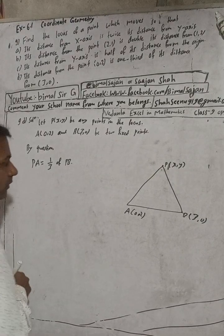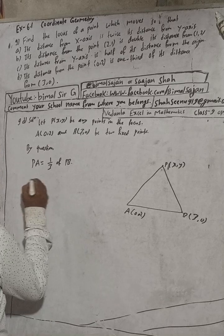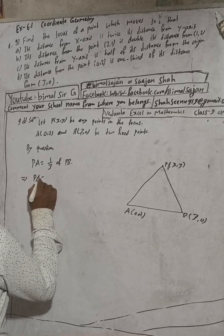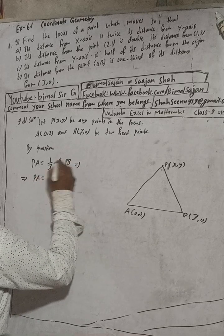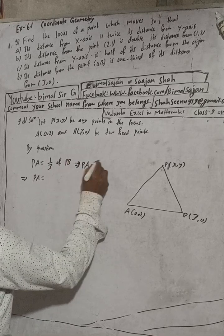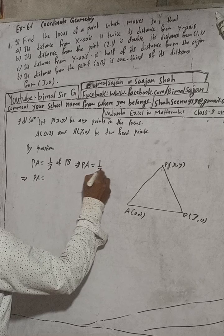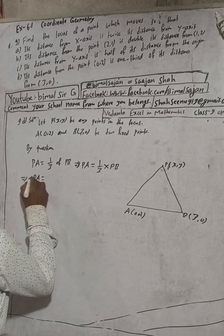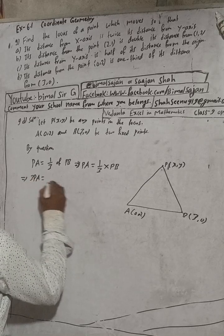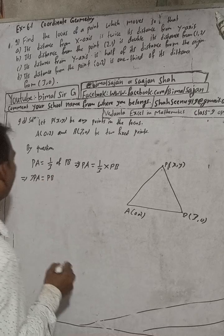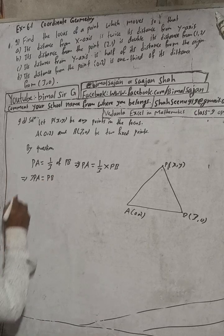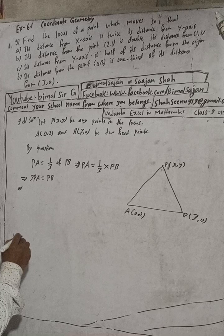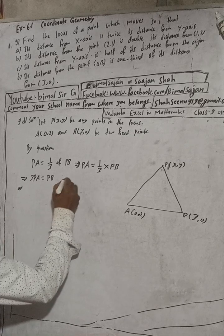Cross multiplying: PA = (1/3) PB gives us 3PA = PB. Now squaring both sides: 9(PA)² = (PB)².